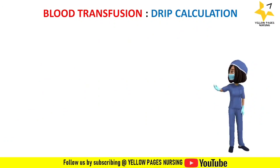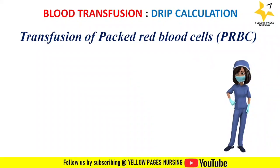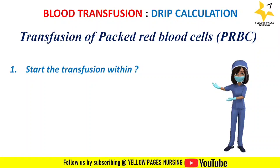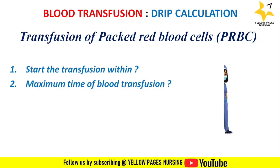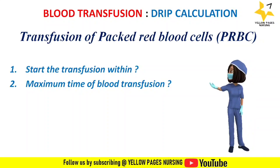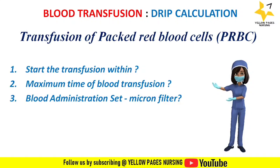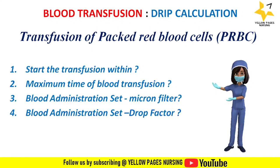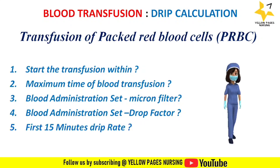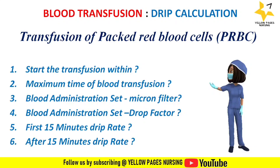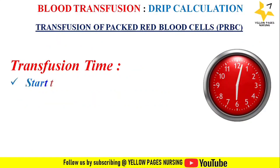We will be discussing certain important points useful for blood transfusion drip rate calculation. While transfusing packed red blood cells, we must consider: first, when we receive a blood unit from the blood bank, within what time frame should the transfusion be commenced; next, what is the maximum time for transfusing blood; and then the blood administration set, including its micron filter and drop factor, and finally the transfusion rate or flow rate.